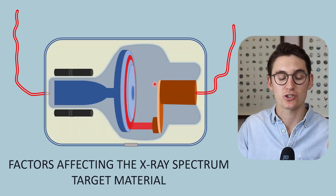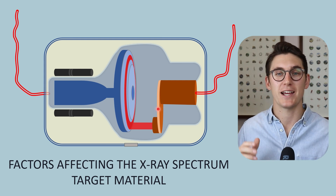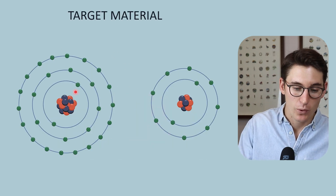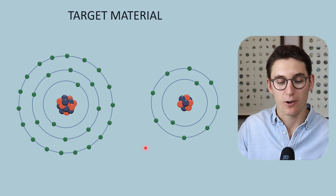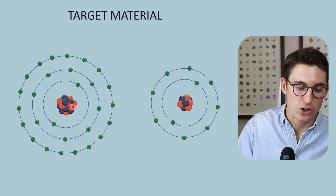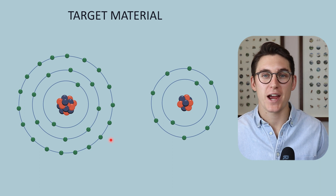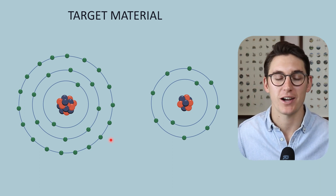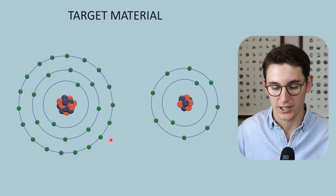The fourth thing we can change is our target material. We've been looking specifically at tungsten, but you can change that target material to create different x-ray spectra. A target material with a higher atomic number will produce more Bremsstrahlung radiation — Bremsstrahlung production is actually exponentially proportional to the atomic number. As atomic number goes up, there is more attractive force between the striking electrons and the nucleus, more slowing down of those electrons, and more release of Bremsstrahlung radiation.